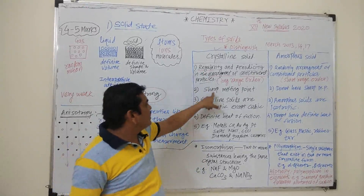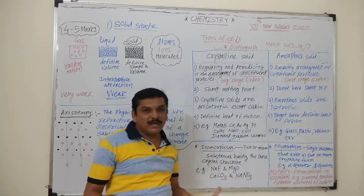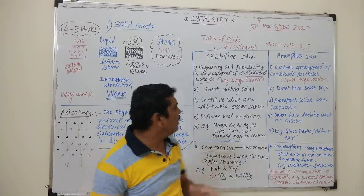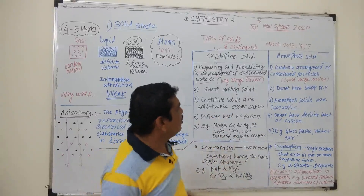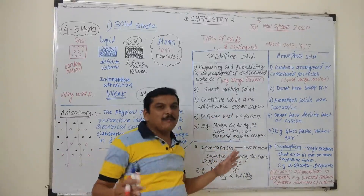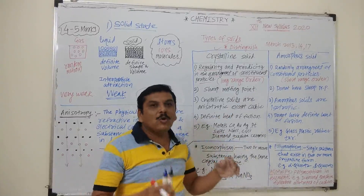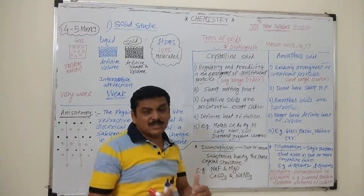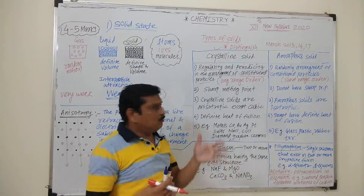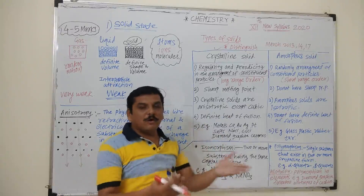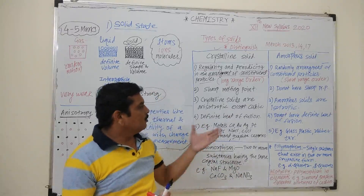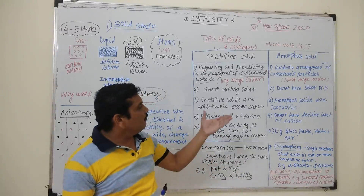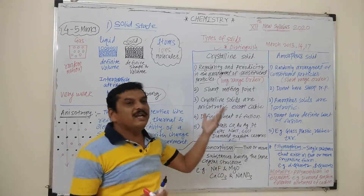Crystalline substances have a sharp melting point, meaning they melt at a definite temperature. Amorphous solids do not have a sharp melting point — they melt over a range of temperature and gradually transition into liquid form when heated.